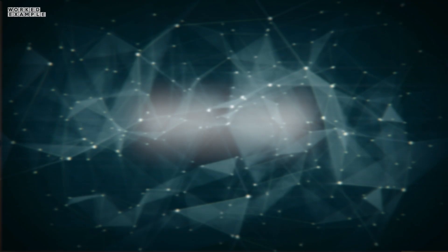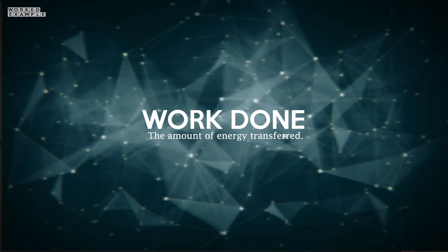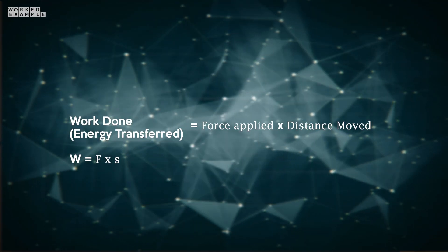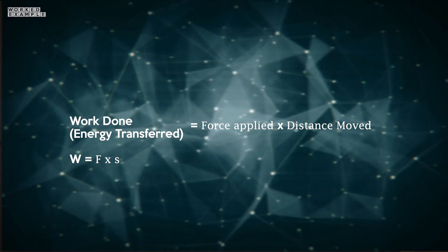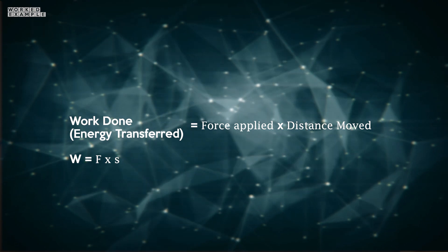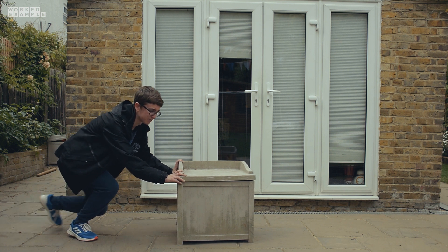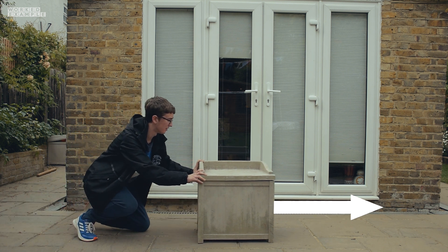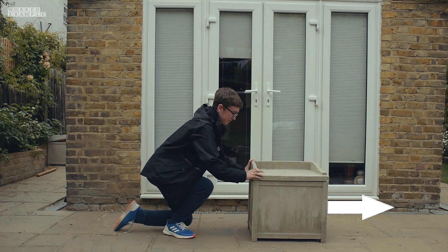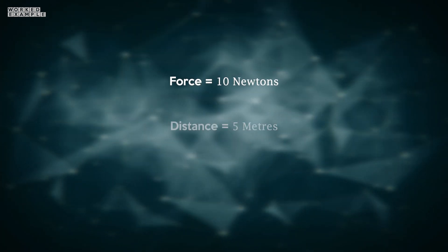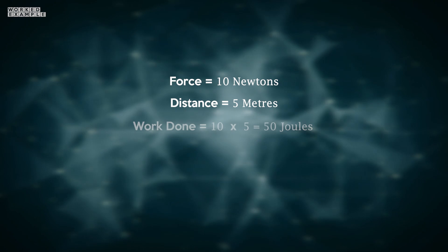Work done is a fancy way to say the amount of energy transferred. The equation to describe the total energy transferred during a mechanical transfer is: work done, or energy transferred, equals the force applied on an object multiplied by the distance moved by that object. For instance, if I exerted 10 newtons of force on a box across 5 metres, I would have transferred 50 joules of energy to the box.